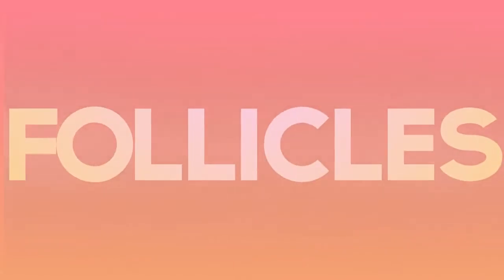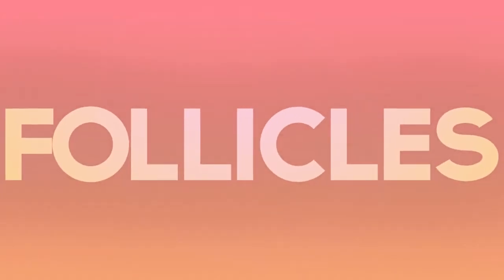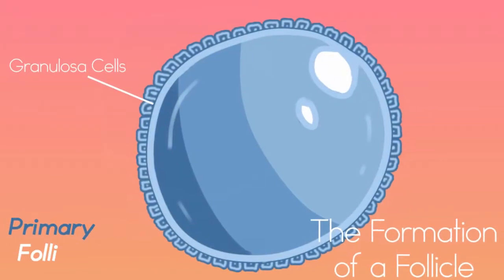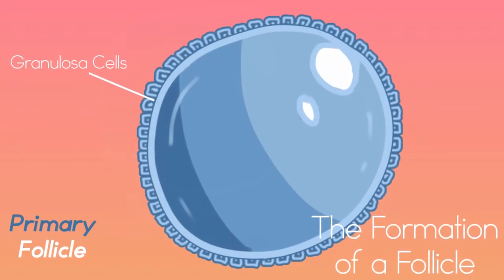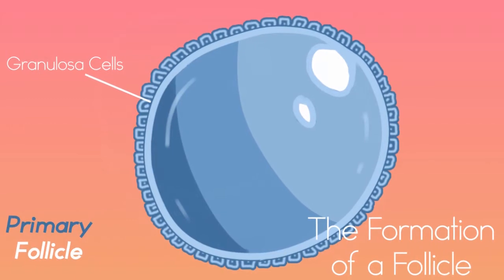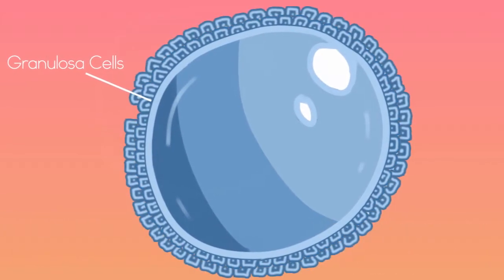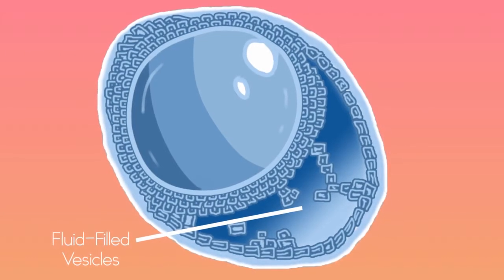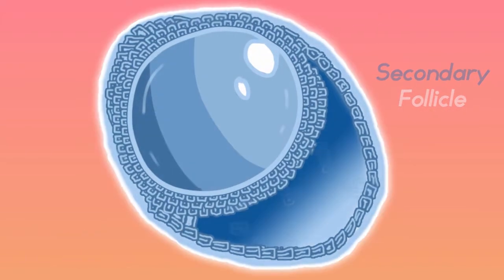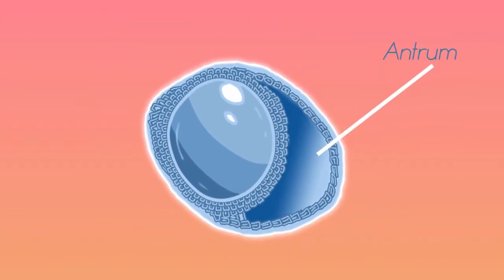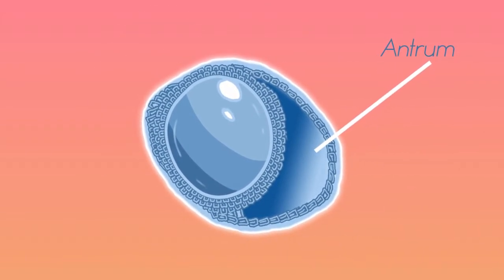Primary oocytes are contained within masses known as follicles. Primary follicles are composed of one layer of granulosa cells that surround the oocyte. As time goes on, the granulosa cells form more than one layer. When fluid-filled vesicles are introduced, the structure is called a secondary follicle. When the fluid-filled vesicle forms a single antrum, the structure is called a mature follicle.